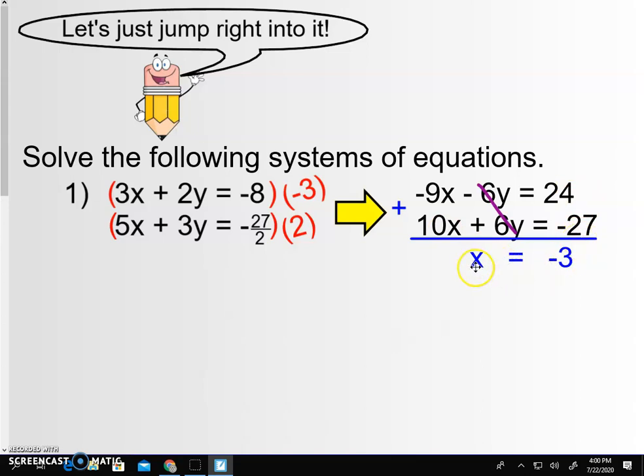And now that I have the x value, I can take that x value and I can plug it into either of these two equations for x. And since I want to avoid fractions, maybe I'll plug it into the top equation. So the top equation becomes 3x. Remember, x is negative 3. 3x plus 2y equals negative 8. Yada, yada, yada. Y equals a half. So my answer is negative 3 comma one half.